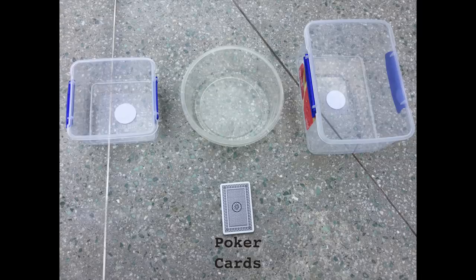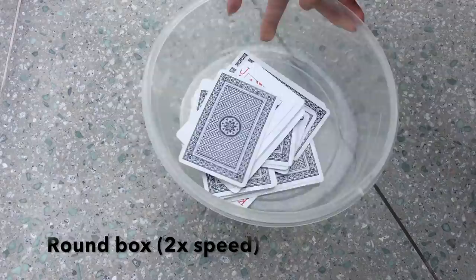First, we use the round container. 20 poker cards are dropped into the box in all directions. We shake it in two different mutually perpendicular directions, 20 times in each direction.